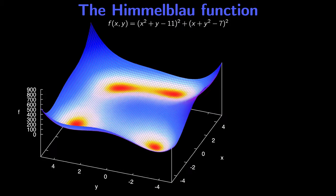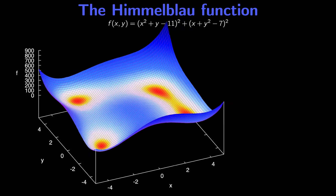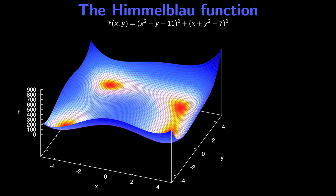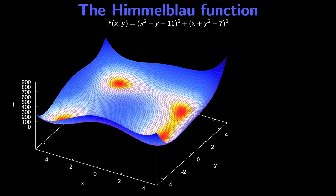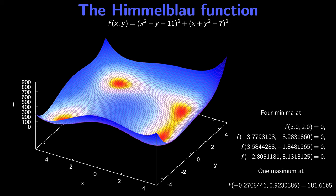If we move away from these local minima in any direction outside of the plotting range shown here, then the function values start to increase rapidly in all directions. We can calculate the positions of the local minima analytically and find that the function value is equal to zero at all four local minima. The single local maximum is located at minus 0.27 comma 0.92, and the function value is 181.6 there. So we'll now take a look at finding these local minima using the steepest descent method.